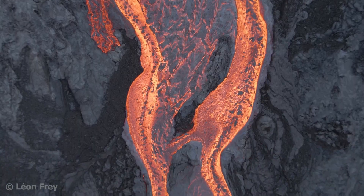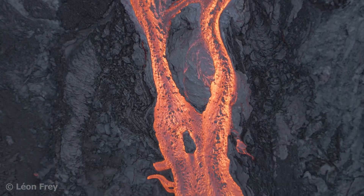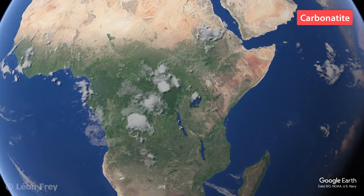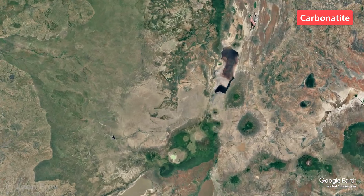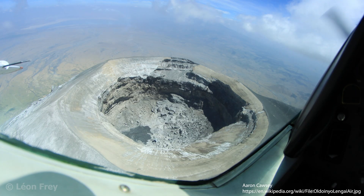Most lavas and magmas on Earth are based on silicates. There is however another rare type of lavas and magmas that is based on carbonates, the CO3 anion. These lavas and magmas are called carbonatites. Currently there is only one active carbonatite volcano in the world: Oldoinyo Lengai in Tanzania. Compared to silicate lavas, carbonatite lavas are much more fluid and erupt at much lower temperatures. There are a few videos on YouTube on Oldoinyo Lengai's lava flows — check them out. The carbonatite lava looks very cool.